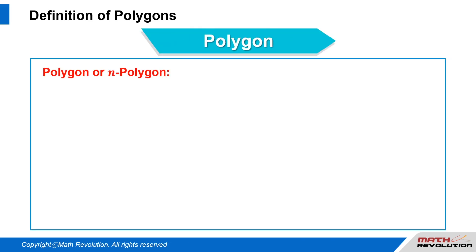Definition of Polygon or N-Polygon: A figure that is composed of N straight sides and N vertices.